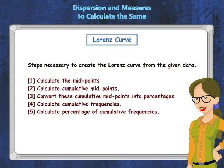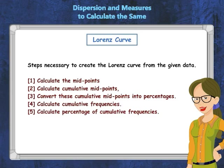A quick look at the steps necessary to create the Lorenz Curve from the given data: 1. Calculate the midpoints. 2. Calculate cumulative midpoints. 3. Convert these cumulative midpoints into percentages. 4. Calculate cumulative frequencies. 5. Calculate the percentage of cumulative frequencies.